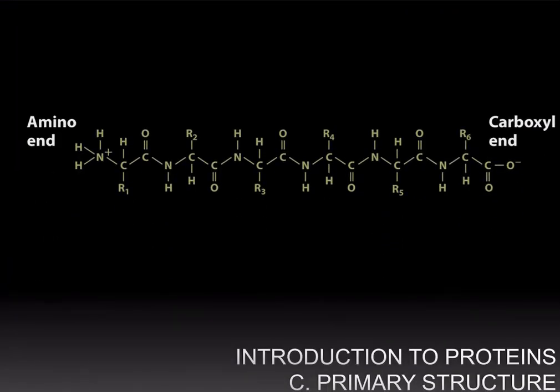Now, the structure of proteins can be described at many levels. And at its most basic, you can look at the primary structure of the polypeptide or protein, which is basically the sequence in which the amino acids appear in the molecule.